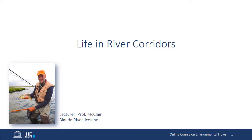In this section of our online course we've been examining the science underpinning e-flows. So far we've considered hydrology, hydraulics, and geomorphology. In this lecture we'll consider the living organisms in river corridors, the connections between them, and hints about the relationships to flow regime. We'll focus squarely on flow-ecology relationships in the next lecture. Humans are also very much part of the life of river corridors, but we've already considered ourselves in earlier lectures, so let's turn our attention to other forms of life.